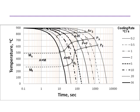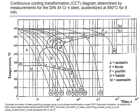So let's see a real one. This is the continuous cooling transformation diagram for DIN 34 Chromium 4 steel, austenized at 850°C for 8 minutes. We have different regions: this is the austenite region, then we have the ferrite region, the pearlite region, the bainite region, and finally martensite.